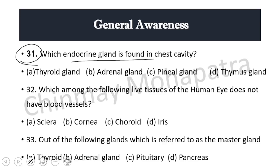Question 31: Which endocrine gland is found in the chest cavity? The right answer is the thymus gland, which is the endocrine gland located in the chest cavity.